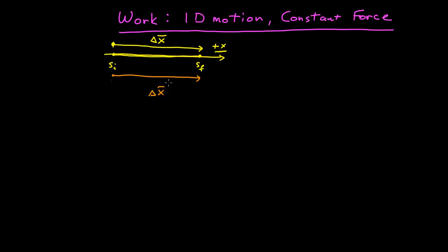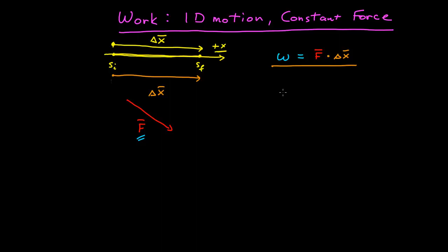So if there is a constant force acting on this object during that time, and it can be going in any direction — so we can have the force go off in some direction, but it's constant — then the net work done on that object by this force is equal to that force dotted with the displacement vector. Before, we learned the general form of work: the work is the integral from initial position to final position of this infinite series of infinitesimal quantities, which is the force dotted into the infinitesimal displacement vector as you move in very small steps along the path.